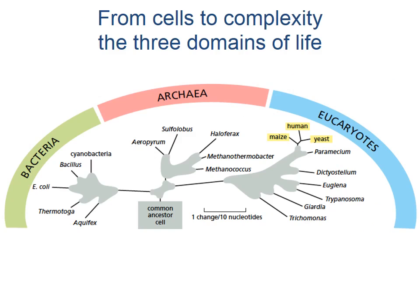Modern organisms can be classified into the three domains of life: the unicellular bacteria and archaea, and the eukaryotes, which include both unicellular and multicellular members. The plants and animals that we are most familiar with are grouped into the eukaryotes.